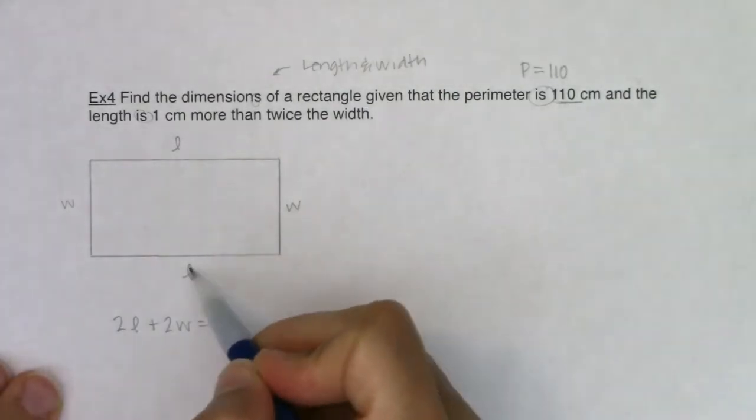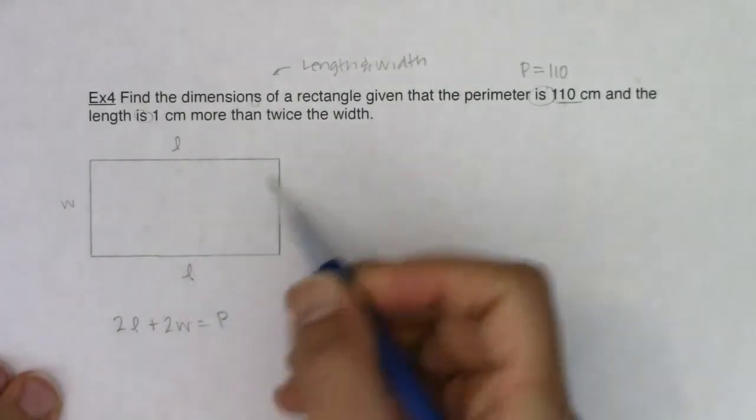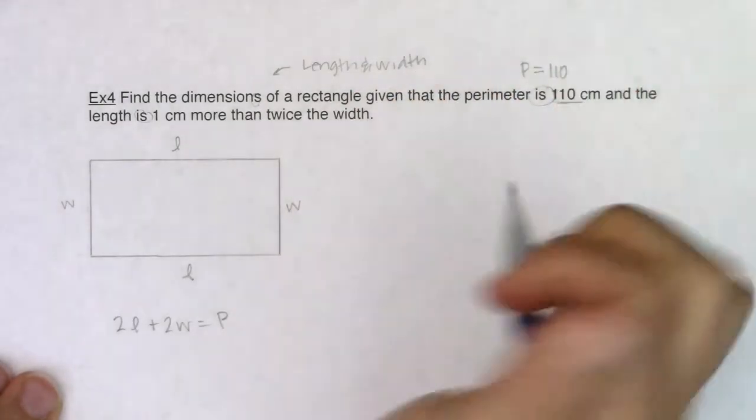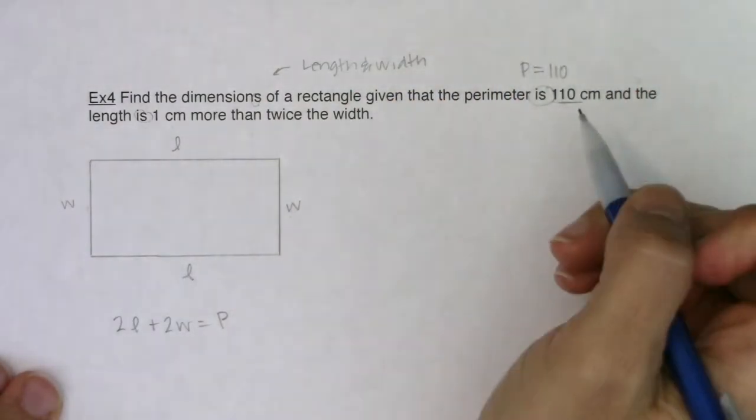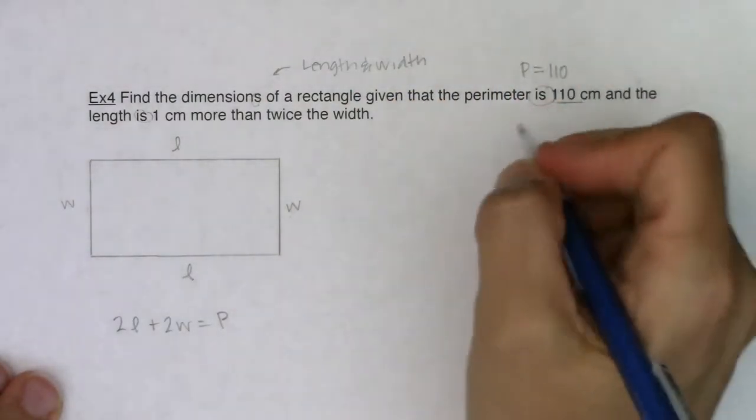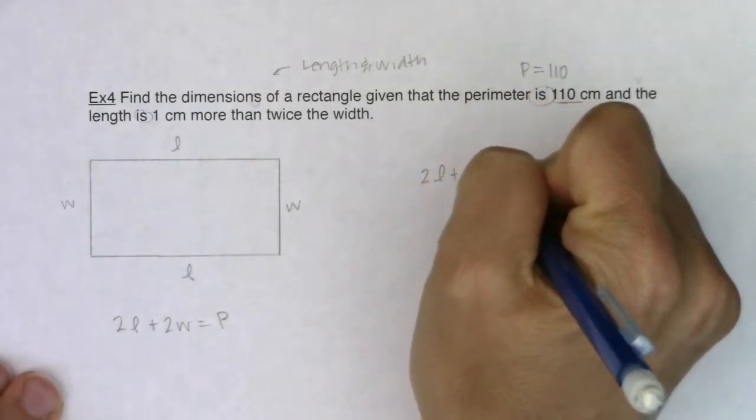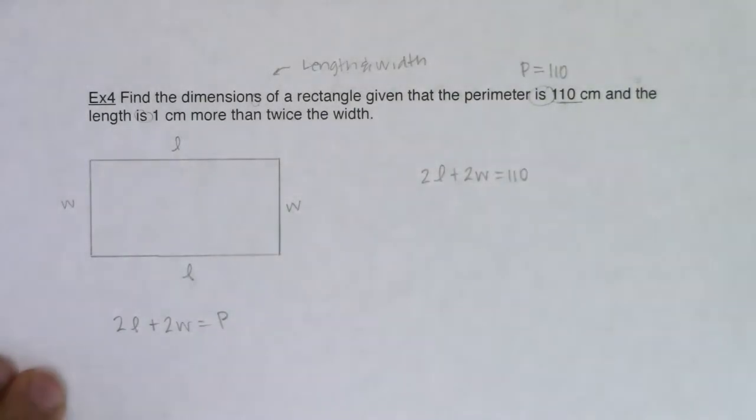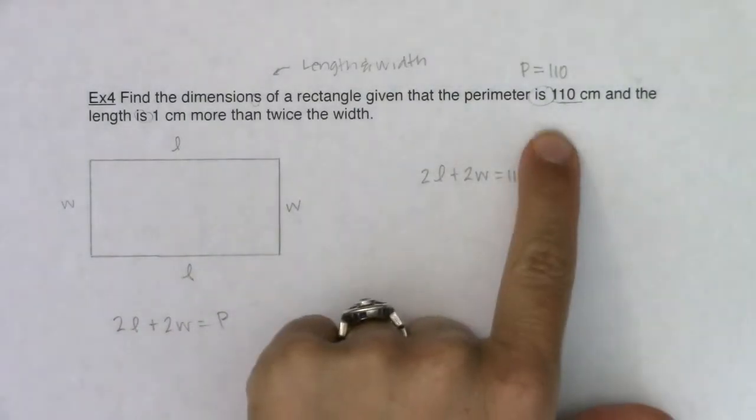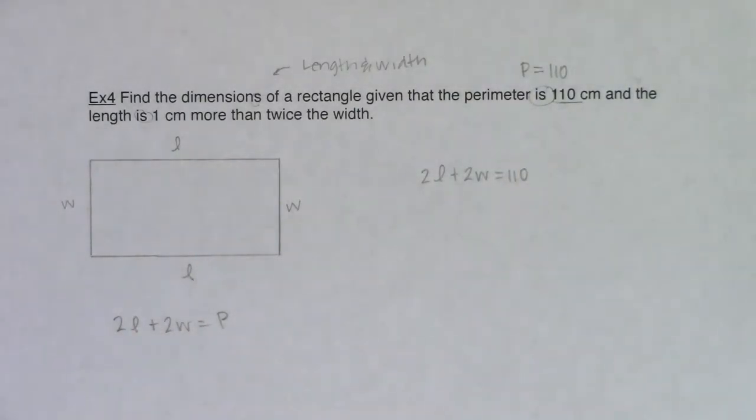Alright, keeping in mind, I would like to find length and width. So if I want to find length and width, if I have two variables, I'm going to ultimately need two equations. Well, here's my first equation. I can see it. It's telling me 2L plus 2W is equal to 110. So I was told my perimeter was 110, so good. There's one of my equations.